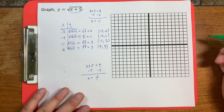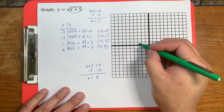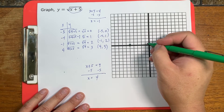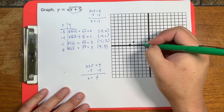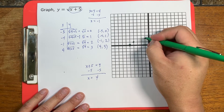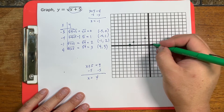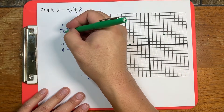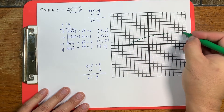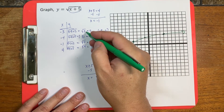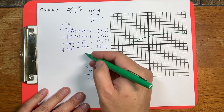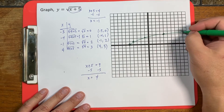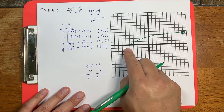Let's graph these points. Negative 5 comma 0 is at x equals negative 5, y equals 0. Negative 4 comma 1 is here. Negative 1 comma 2 would be here. And 4 comma 3 would be over here. This can get bigger because perfect squares can get bigger — 0, 1, 4, 9, 16, 25, 36 — but they can't get smaller. So we have the arrow on this side and no arrow on that side.